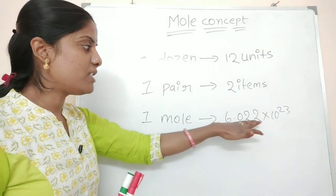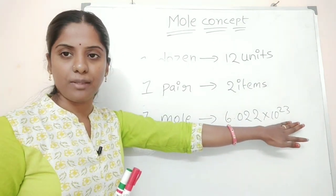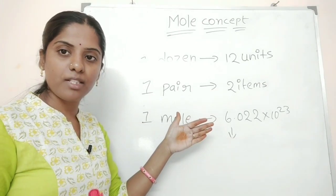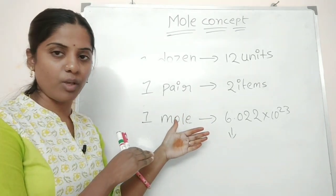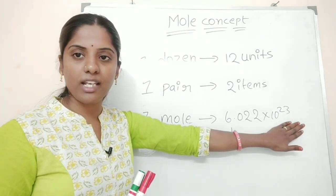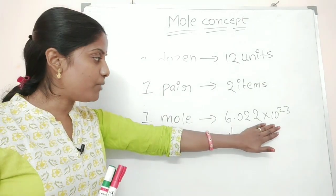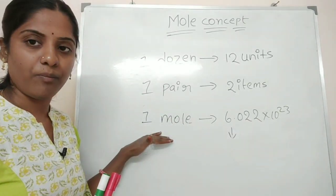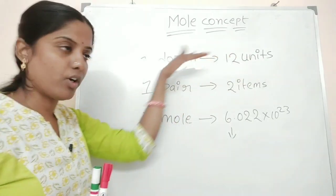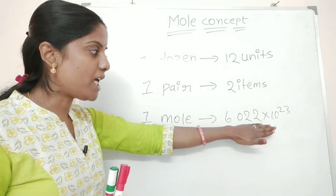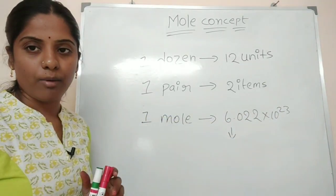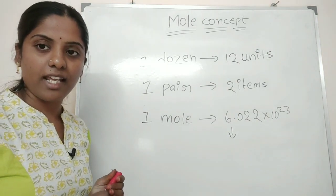One mole is 6.022 into 10 to the power of 23. One dozen means we count 12 items. Similarly, 6.022 into 10 to the power of 23 is just like a counting number — when we count that many items, we call it 1 mole.